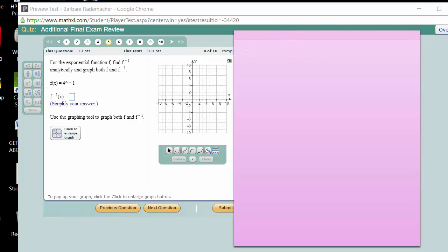We have to find the inverse of f(x) equals 4 to the x power minus 1. This is an exponential function right here. The first step we change to y equals 4 to the x power minus 1.